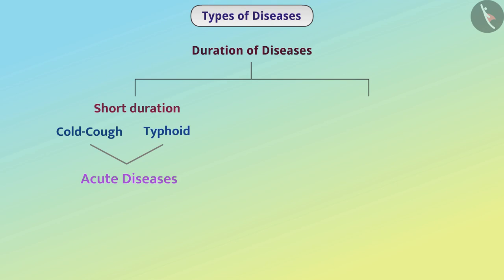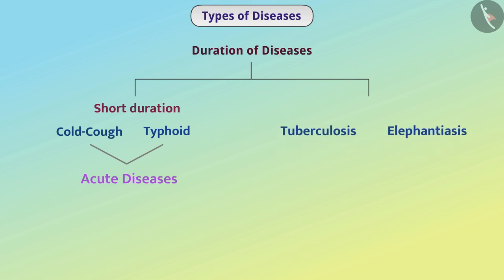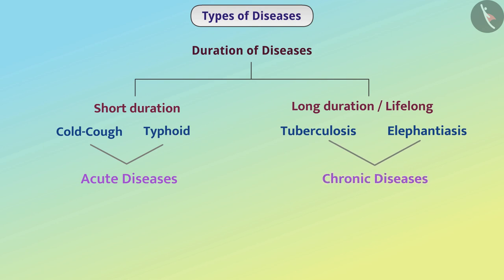Some diseases like tuberculosis and elephantiasis develop after a long time and are of long duration or lifelong. Such diseases are called chronic diseases. Since the disease lasts for a long time, they cause specific harm to our health. Therefore, the patient feels fatigue and his weight is reduced.